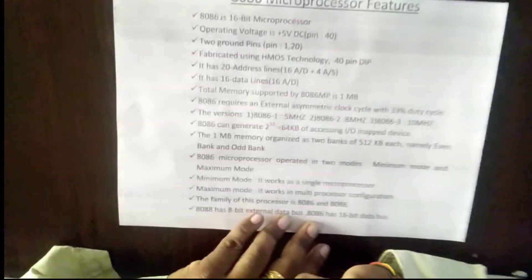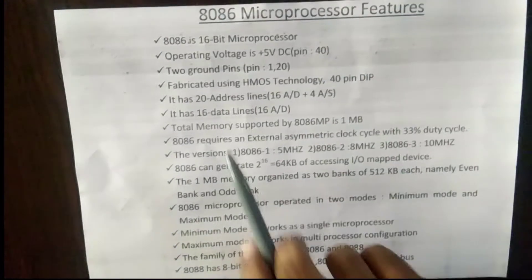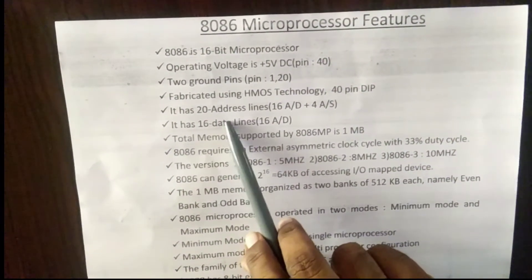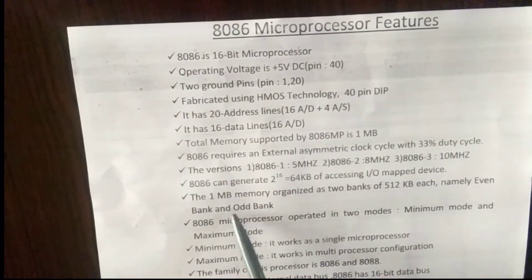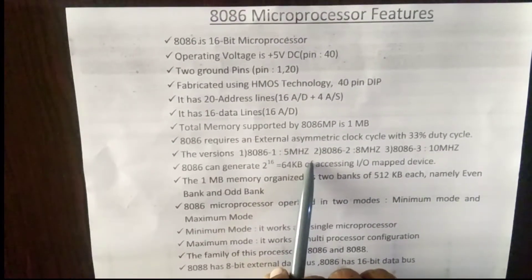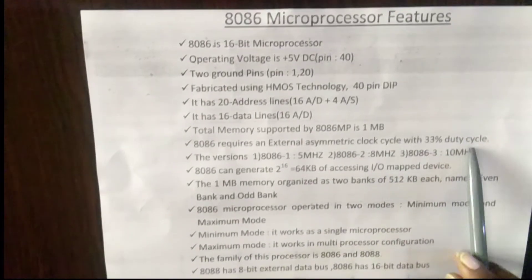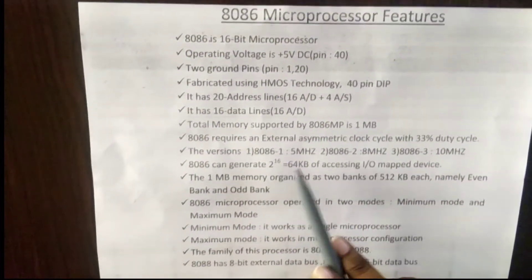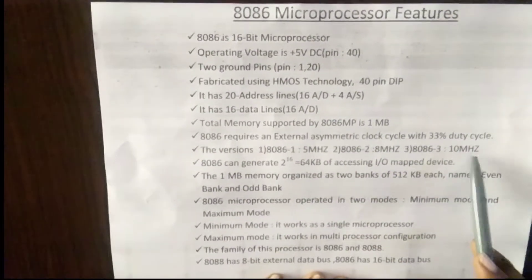The total memory supported by the 8086 microprocessor is 1 MB, because there are 20 address lines — 2 to the power of 20 equals 1 MB. The 8086 requires an external asymmetric clock cycle with a 33% duty cycle, and it is available in three versions: 5 MHz, 8 MHz, and 10 MHz.